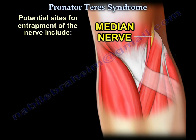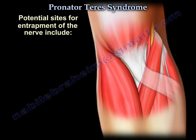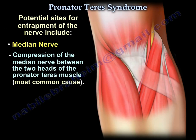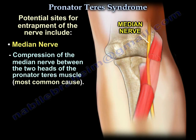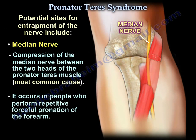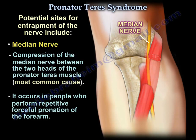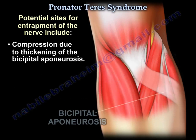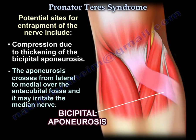Potential sites for entrapment of the nerve include: the most common cause is compression of the median nerve between the two heads of the pronator teres muscle, which occurs in people who perform repetitive forceful pronation of the forearm. Another cause is compression due to thickening of the bicipital aponeurosis, which crosses from lateral to medial over the antecubital fossa and may irritate the median nerve.